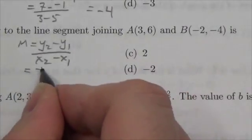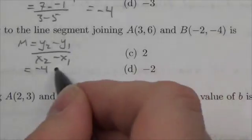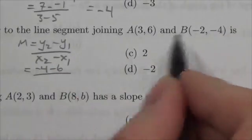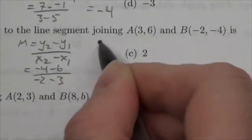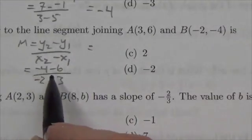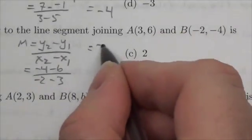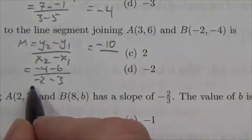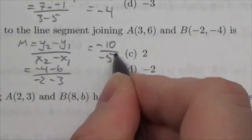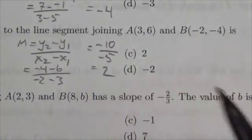And then we'll take negative 4, the y-coordinate of the second point minus the first point, negative 2 minus 3, and so negative 4 minus 6 will be negative 10, negative 2 minus 3 is negative 5, and when you divide that out you get 2.